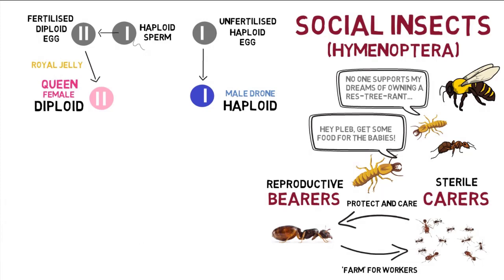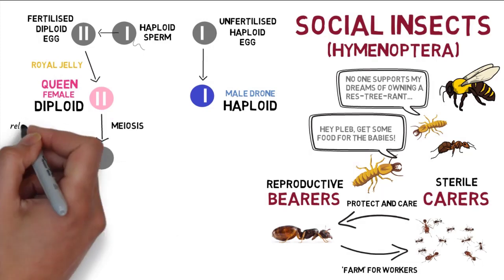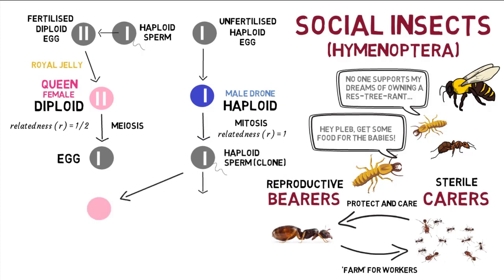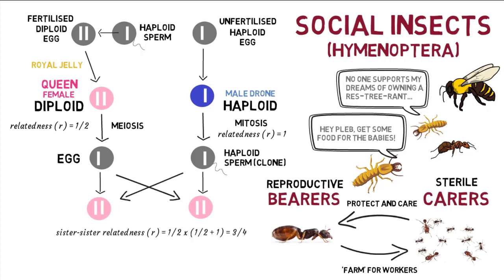As the mother only gives half her genes to her son, the queen has half-relatedness to her sons, the same as to her daughters. However, since daughters inherit all the genes from the male father, relatedness between sisters is skewed to three-quarters, and only one-quarter between sisters and brothers.